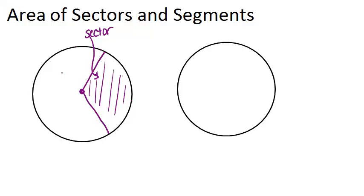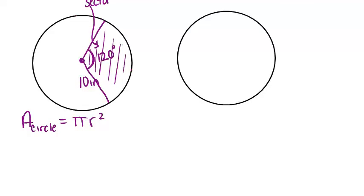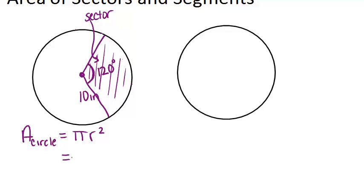In order to figure out the area, we need to know what angle this is — the central angle — and the radius, so that we can figure out the area of the whole circle. So if the radius was 10 inches and the central angle was 120 degrees, what would the area of the whole circle be? The area of the whole circle is pi times the radius squared. So since the radius is 10, the area will be pi times 10 squared, or 100 pi.